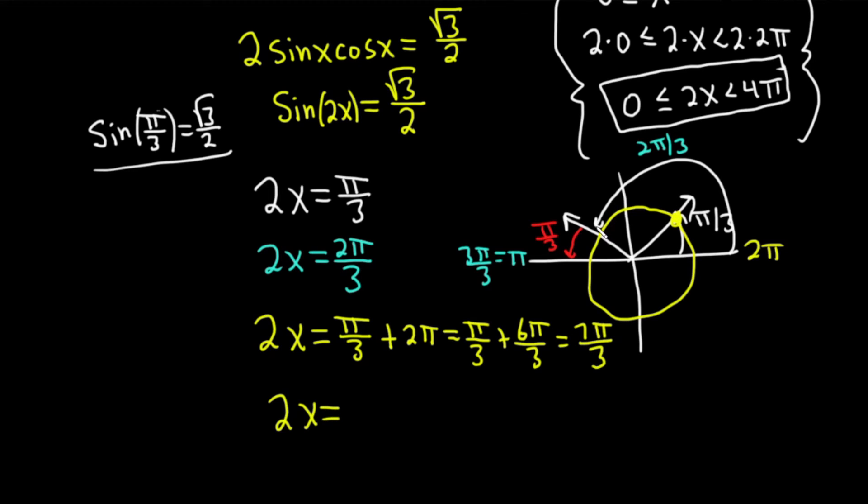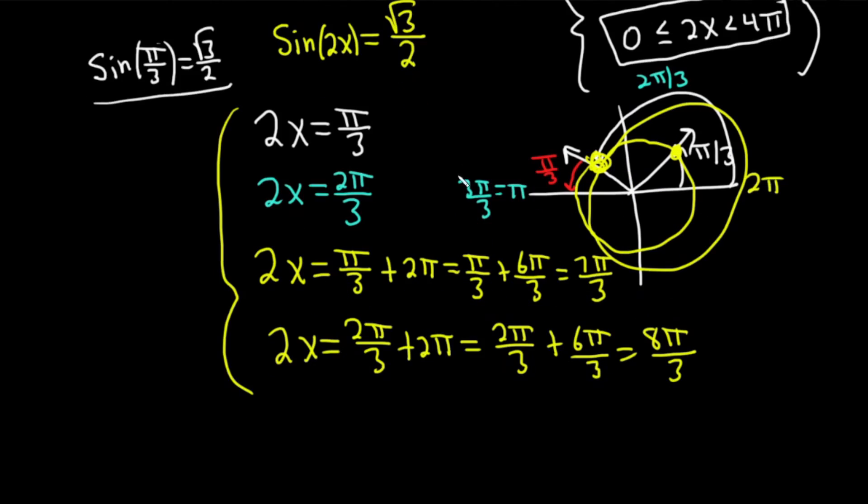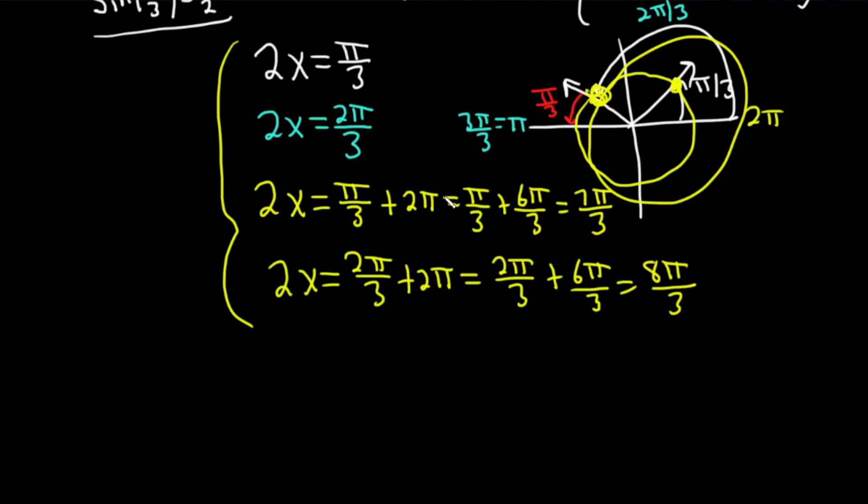And then we have another answer. You can do the same thing with 2π over 3. Here's 2π over 3. You can add 2π and get back to the same place. So you have 2π over 3 plus 2π. And these are things you might have missed if you didn't change your interval like I mentioned earlier. This is 2π over 3 plus 6π over 3 which is 8π over 3. So 2x is 8π over 3. And almost done. So very, very sneaky. This is probably one of the harder trig equations you do.